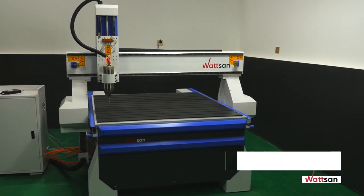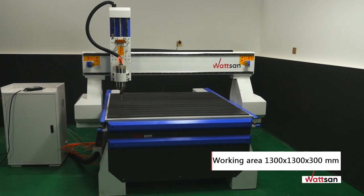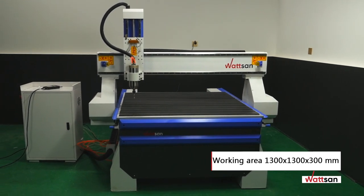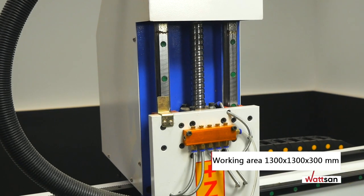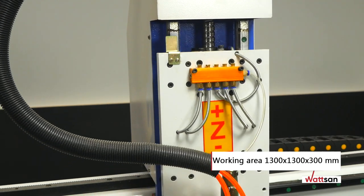The size of the milling working area is 1300 by 1300 millimeters. Increased height of spindle stroke in Z-axis is 300 millimeters.